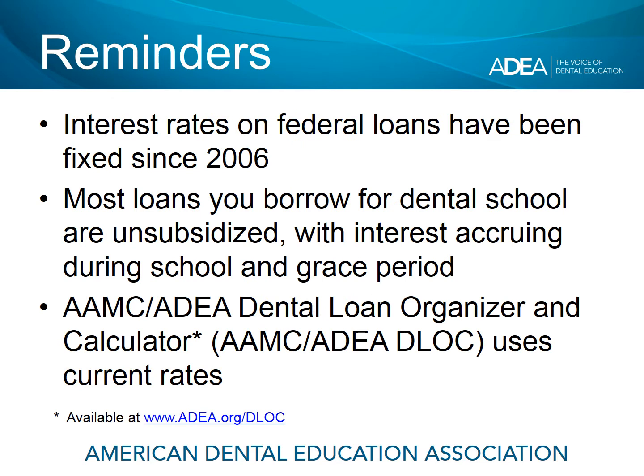We start with some important reminders. Up until 2006, interest rates on federal student loans were variable, but starting in 2006, the rate structure changed on federal loans. Now any interest rate that you get on your direct unsubsidized or direct plus loan will be fixed for the life of the loan. Most of the loans you borrow during dental school are unsubsidized, meaning the interest begins to accrue or build up at disbursement and will accrue all the way through school and your grace period.